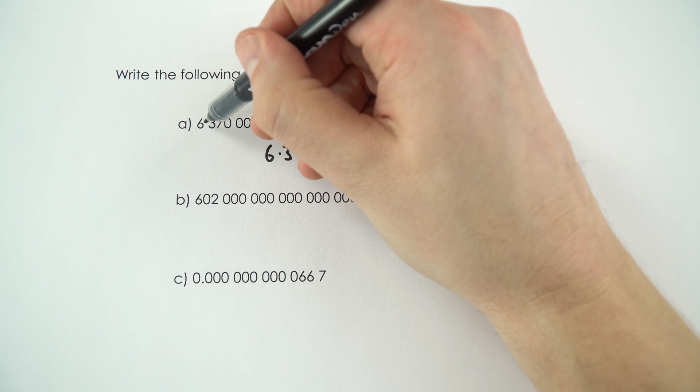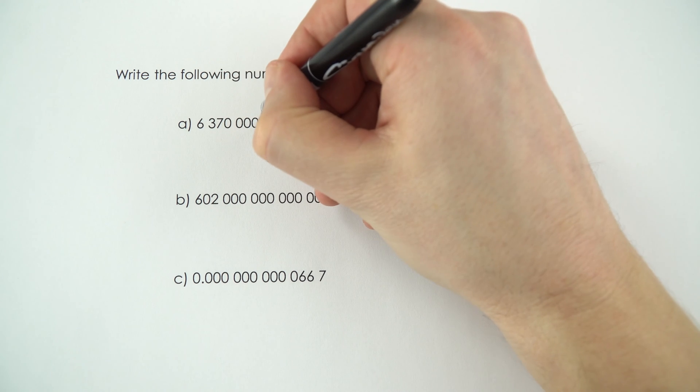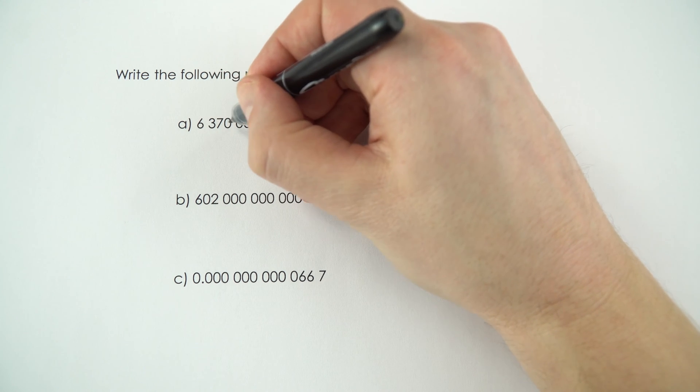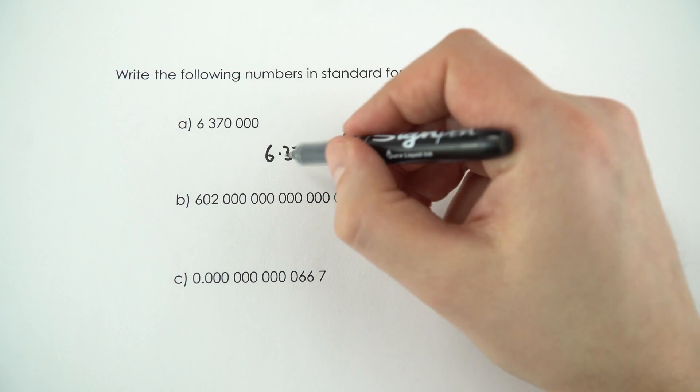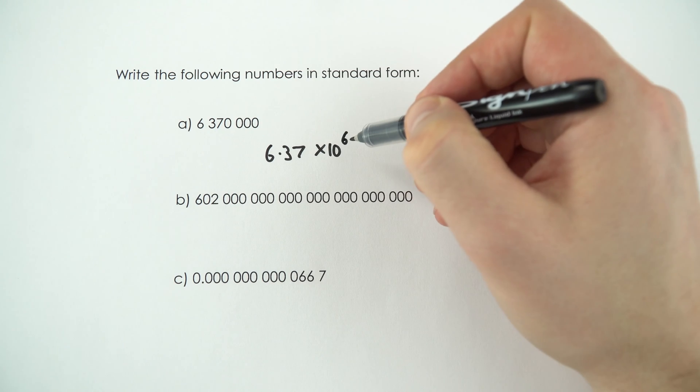To go from 6.37, we're thinking about moving that decimal place 1, 2, 3, 4, 5, 6 times. So we write this as 6.37 times 10 to the 6.